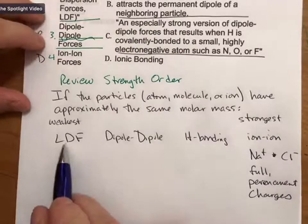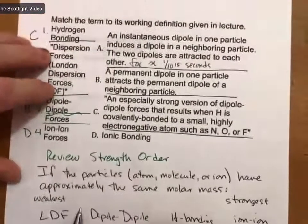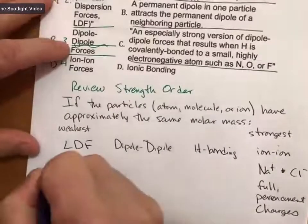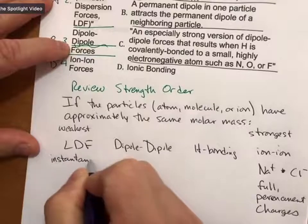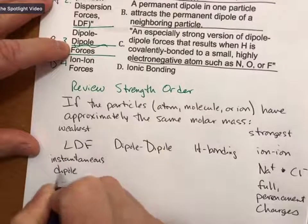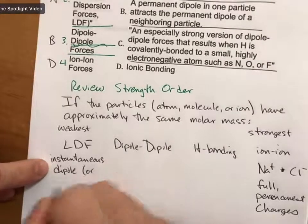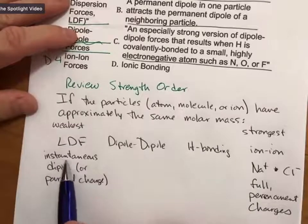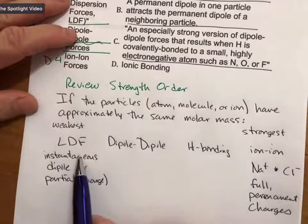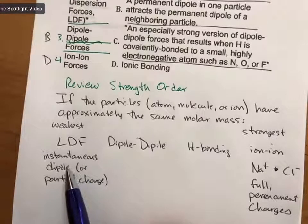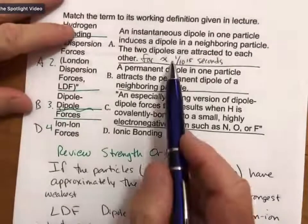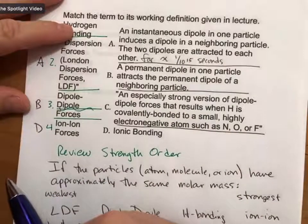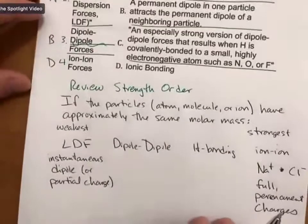On the other side of the weakest ones, those involve instantaneous dipoles, where a dipole is a partial charge. So instantaneous dipole, or partial charges, or partial charge. Instantaneous is contrasted with permanent. Permanent means always there. Instantaneous means only there for an instant. And what does that instant mean? Well, I said approximately 1 over 10 to the 15th second, which is a femtosecond. It does not get much shorter than that.